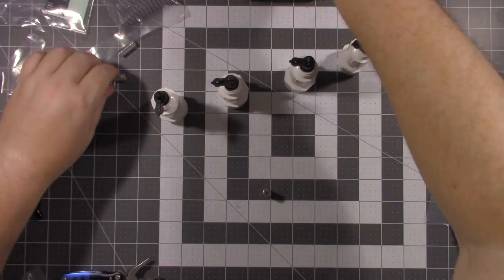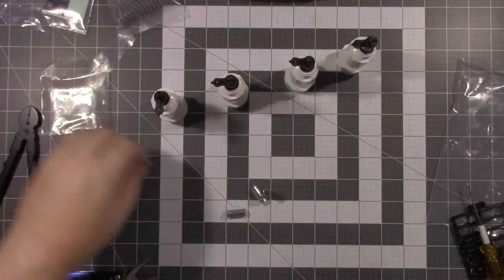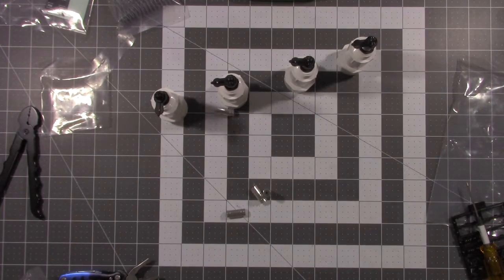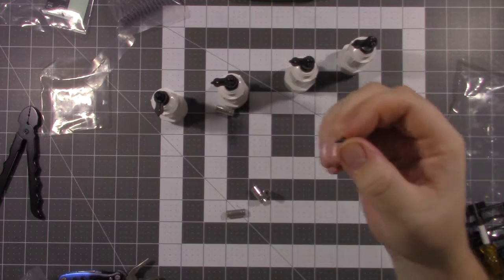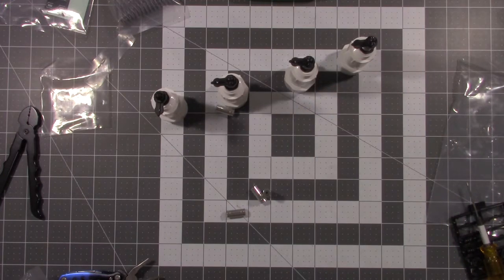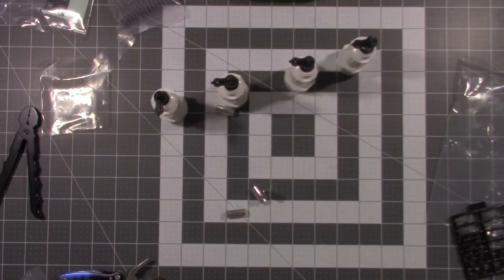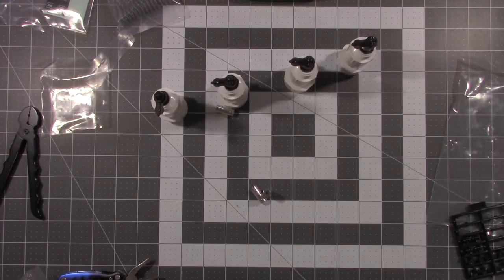Next step is to put the little fake reservoirs on there and you use this 2 by 6 millimeter little screw. It uses a 1.5 millimeter hex.